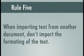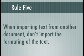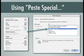In conjunction with rule four is rule five: don't unintentionally change your format. When you're importing text from another document, don't import the formatting of the text also. In Microsoft Office, how you do it is use the command paste special. You do something similar in Pages and everything else. Basically what it does is it pastes the text without the formatting.